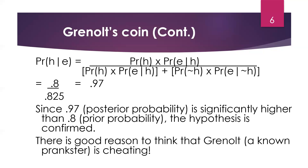So what does that mean? That's a pretty good confirmation. The probability of the hypothesis given the evidence is 0.97 — a lot higher than just the prior probability of the hypothesis on its own, 0.8. So the hypothesis is confirmed. We have good reason to think that Grenault, who is a known prankster, is in fact cheating in this situation — that he is using an unfair coin, perhaps a two-headed coin.